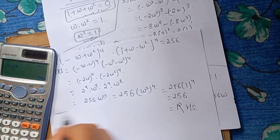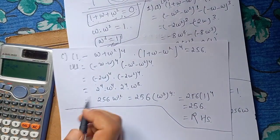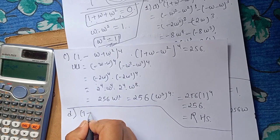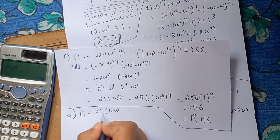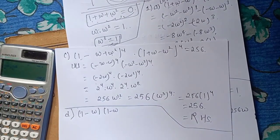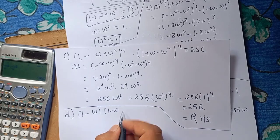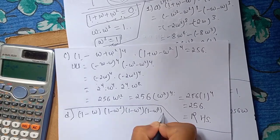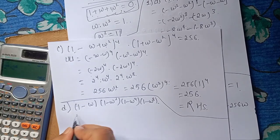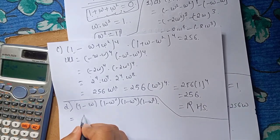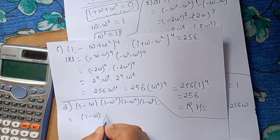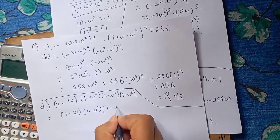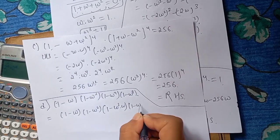RHS is equal to RHS. The d number is 1 minus omega square. The d number is 1 minus omega square. Here we can see: 1 minus omega square. Omega square is omega cube into omega, this is 1 minus omega square.